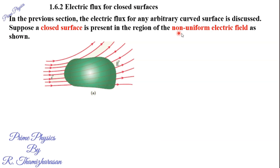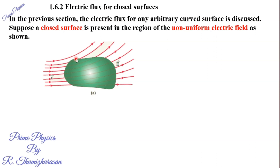What is a non-uniform electric field? The strength of the electric field is different at different points. A uniform electric field is represented by parallel lines. We represent the non-uniform electric field with curved lines — divergent and convergent curved lines.